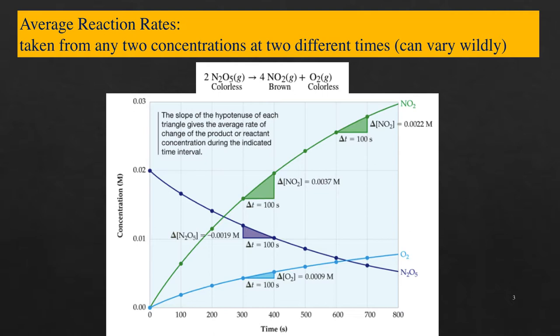Reactions go more quickly at the start, and then go more slowly as the reaction progresses in time. For rough calculations, the average rate is sufficient.